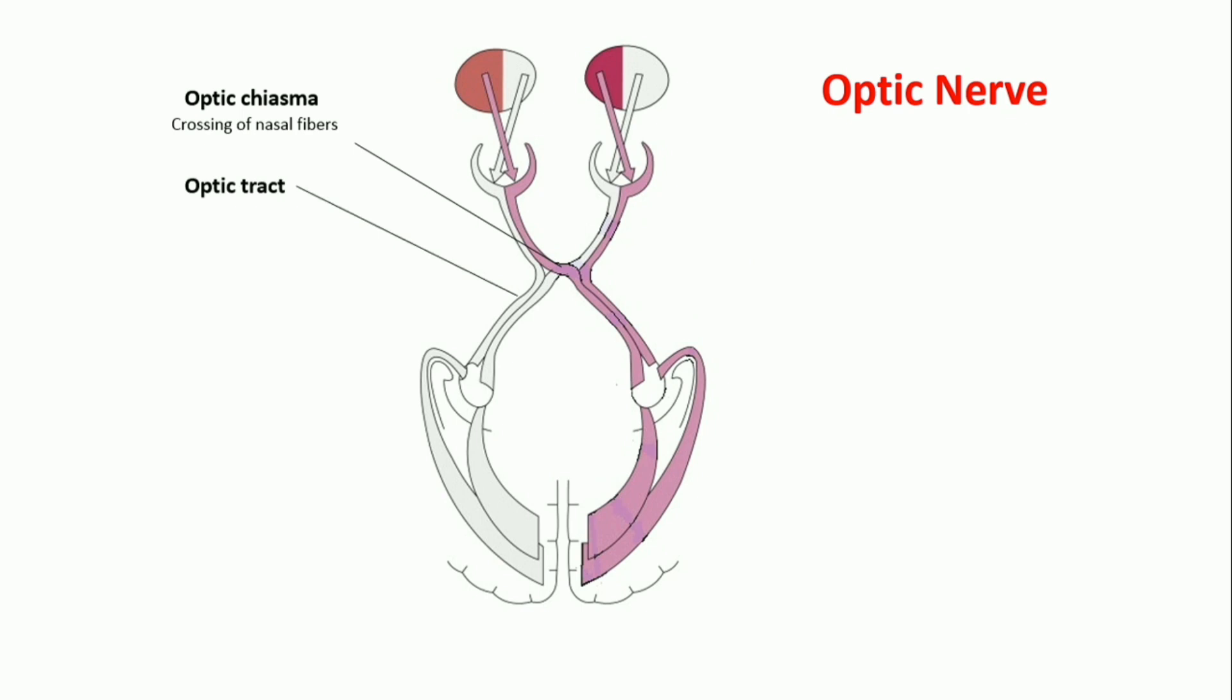Optic tract is formed by temporal fibers of ipsilateral and nasal fibers of contralateral side. Therefore, sensory information from optic tract to visual cortex represents the contralateral visual field.